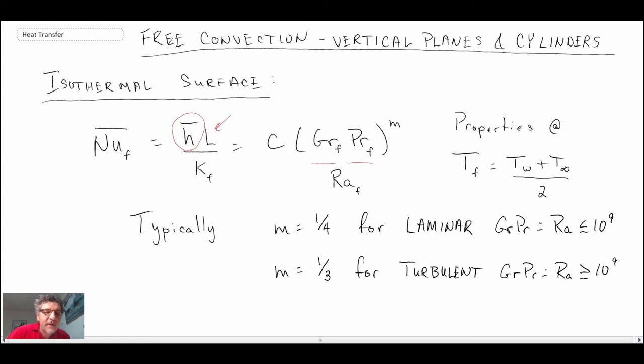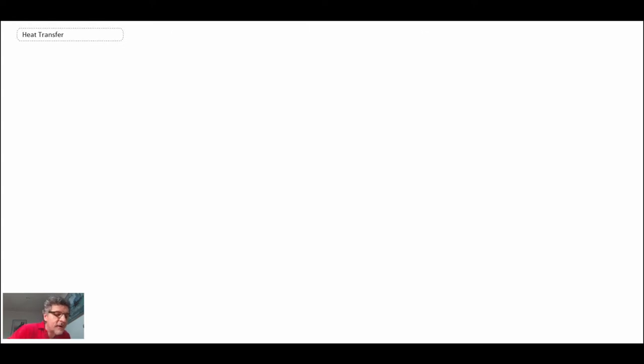That is a relationship that we sometimes use for natural convection. That's Grashof Prandtl expressed as the Rayleigh number. That is an expression that we will quite often find for free convection on a vertical surface. Now I mentioned that you can use this for cylinders under certain approximations.